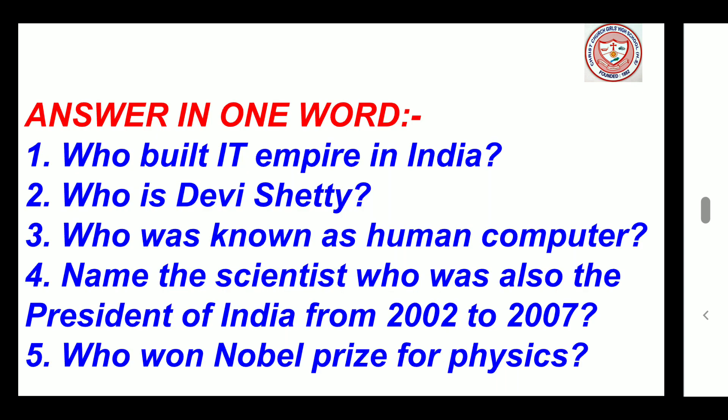Now children, let's do some revision. Here is a worksheet for you. Answer in one word — you only have to write the correct answer, not the full sentence. Number 1: Who built the IT empire in India? Narayan Murthy. Number 2: Who is Devi Shakti? Heart Surgeon. Number 3: Who was known as the human computer? Shakuntala Devi. Number 4: Name the scientist who was also the President of India from 2002 to 2007. Dr. A.P.J. Abdul Kalam.